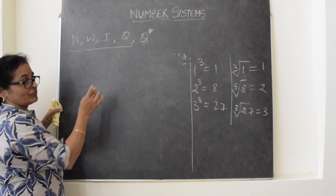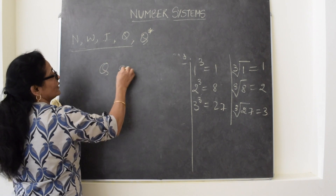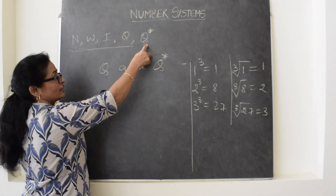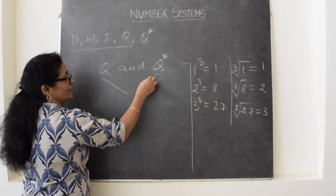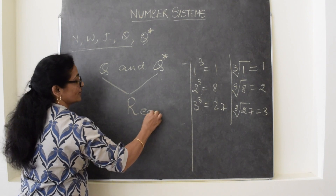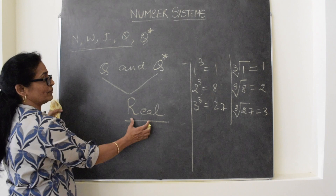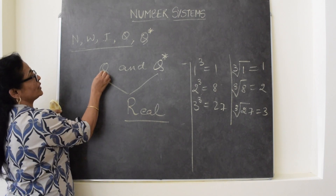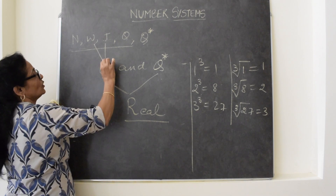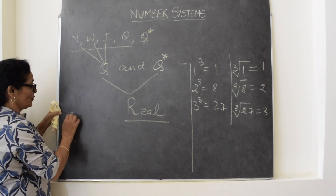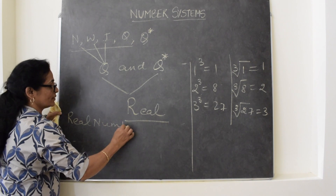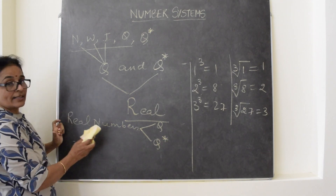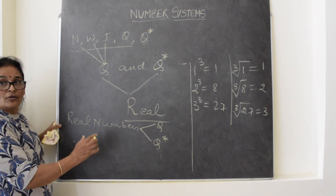We can also say that when you combine rationals and irrationals — irrationals can also be represented by Q star — a new type of numbers are formed: real numbers. So real numbers is the combination of rationals and irrationals. Always remember, rational numbers already contain integers, whole numbers and natural numbers. So these real numbers are either rationals or irrationals, and the biggest set till now is the set of real numbers.